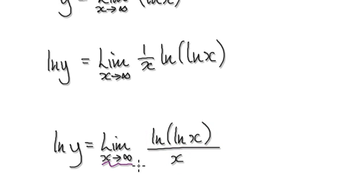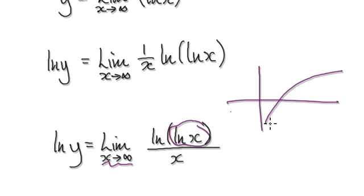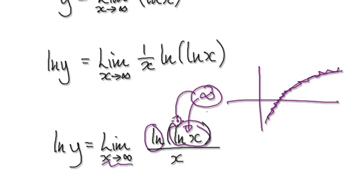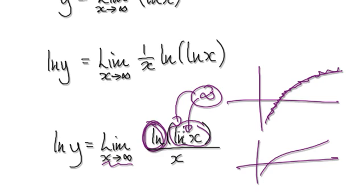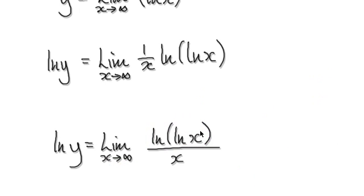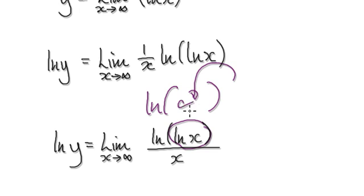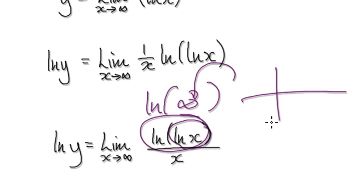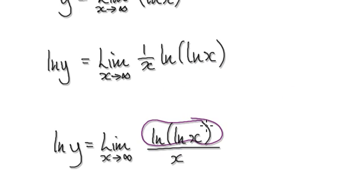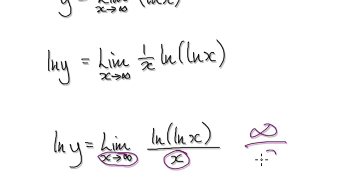Now let's check it. As x tends to infinity, the natural log function heads towards infinity. Putting that infinity back into the outer natural log, it is also heading towards infinity. So this whole numerator here is heading towards infinity, and the denominator is also heading towards infinity.